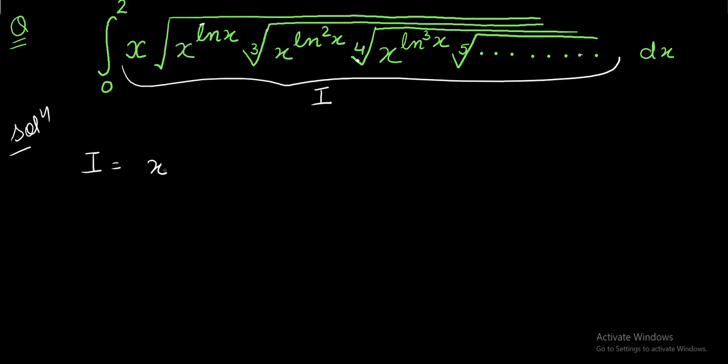So let us start. The first term is x power 1. The second term is x power ln x by 2. The third term similarly when you remove the square root and the cube root it turns out to be x power ln square x divided by 2 dot 3. The fourth term becomes x power ln cube x whole divided by 2 dot 3 dot 4 and so on to infinity.